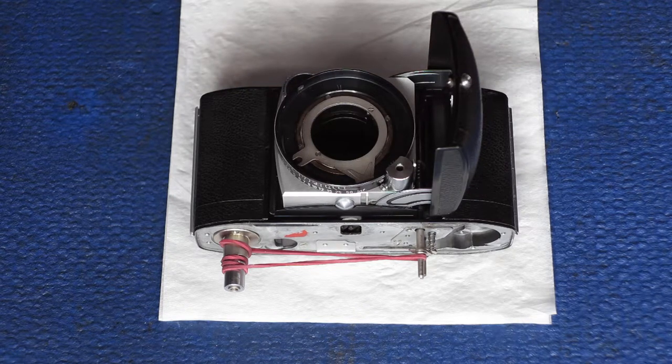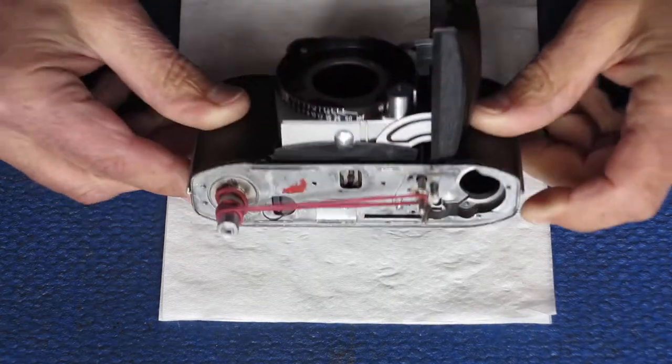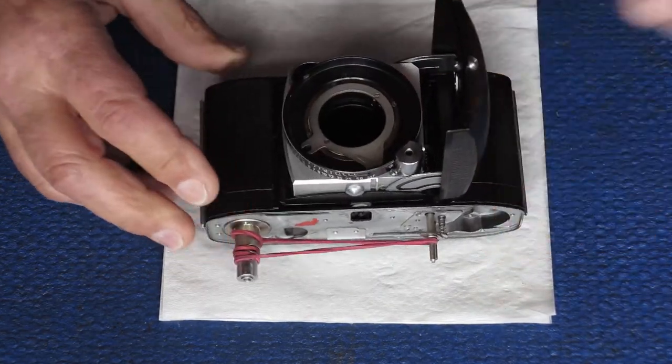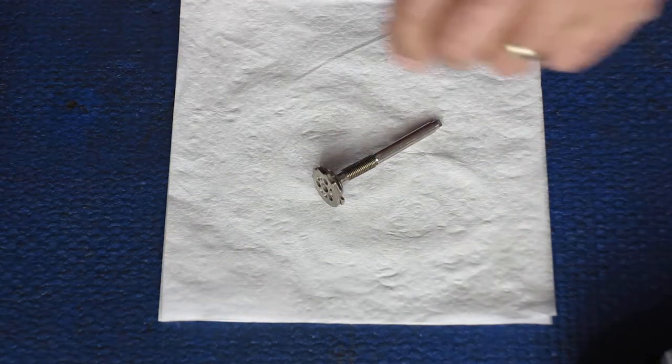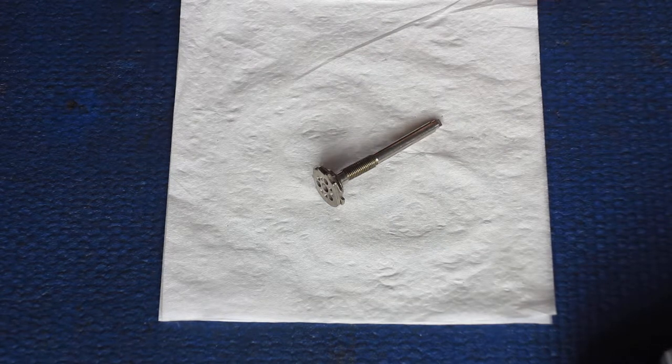Now I've got to assemble the film advance on this camera. Everything else is ready to go. So we'll start with the advance shaft and first I've got to apply some lubricant to this.